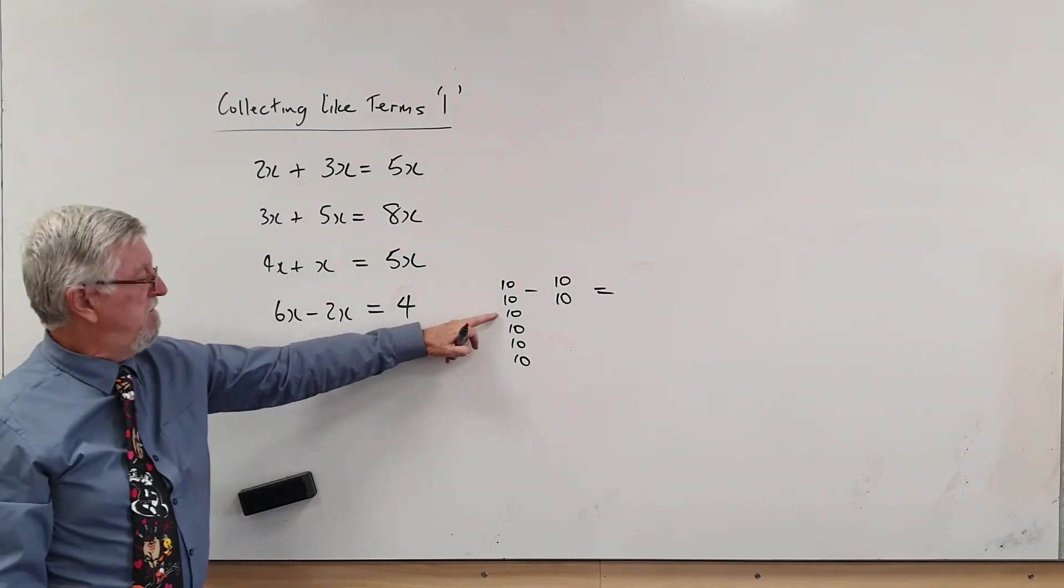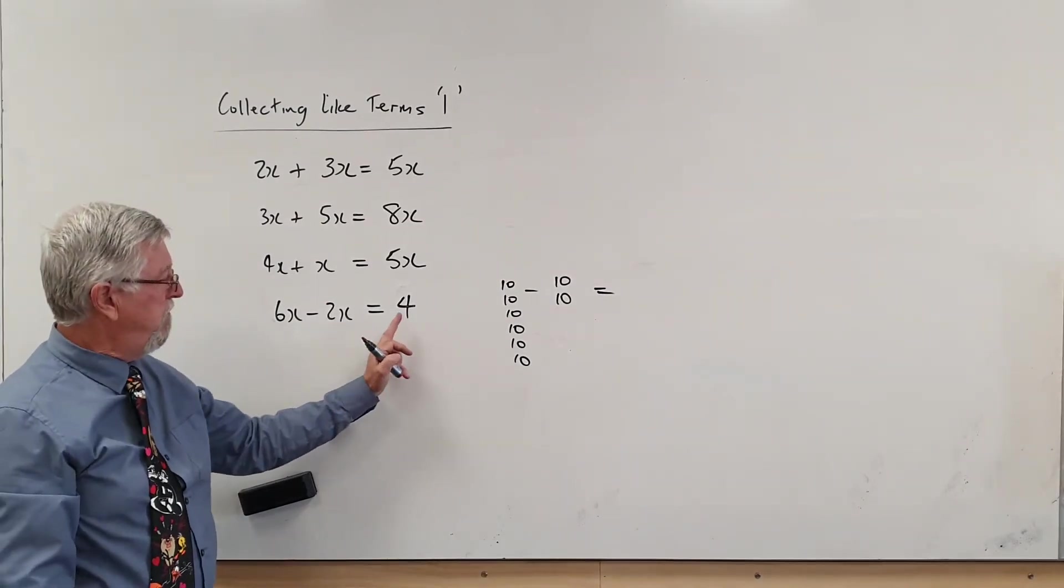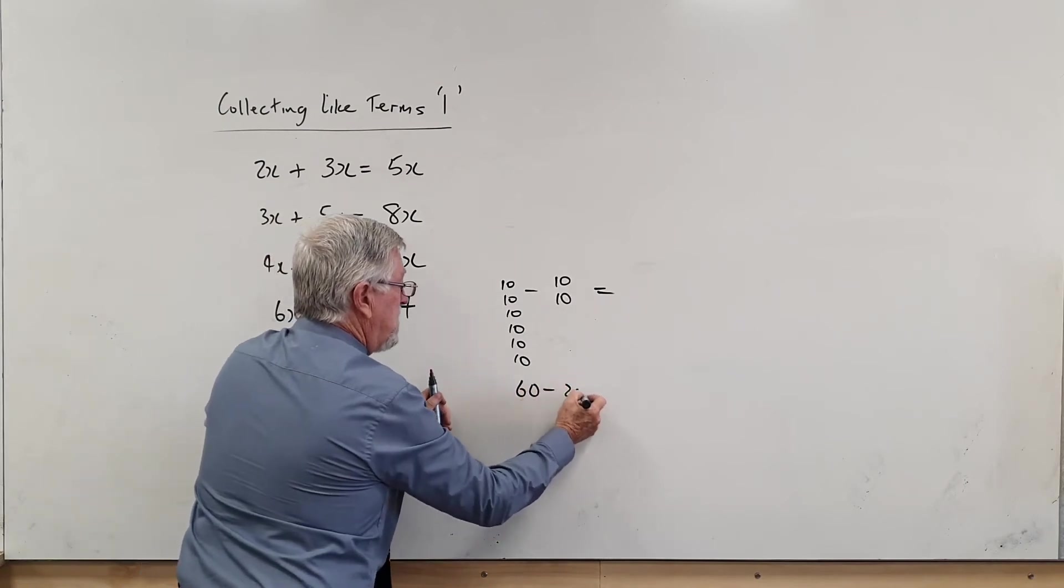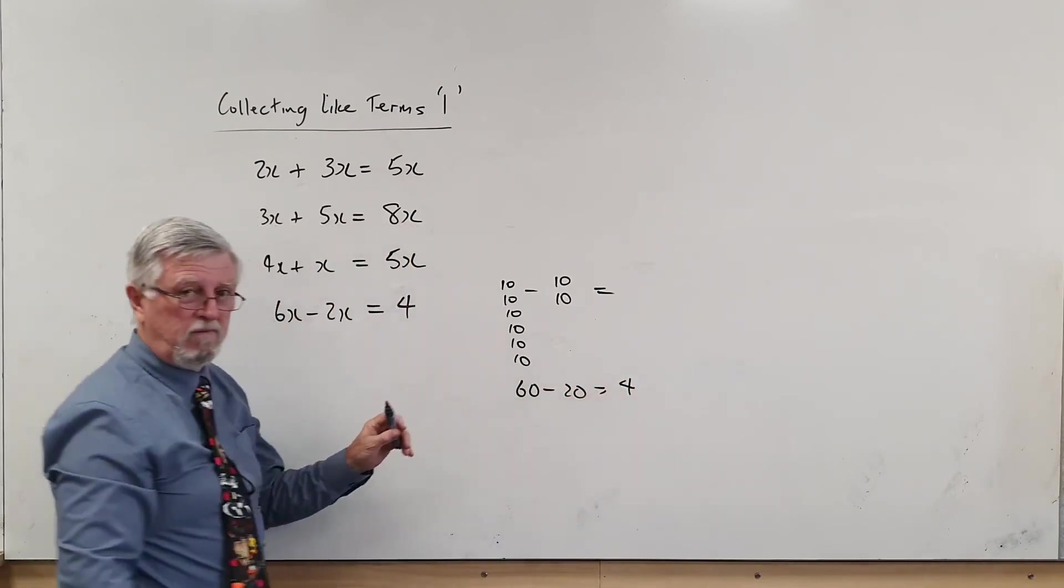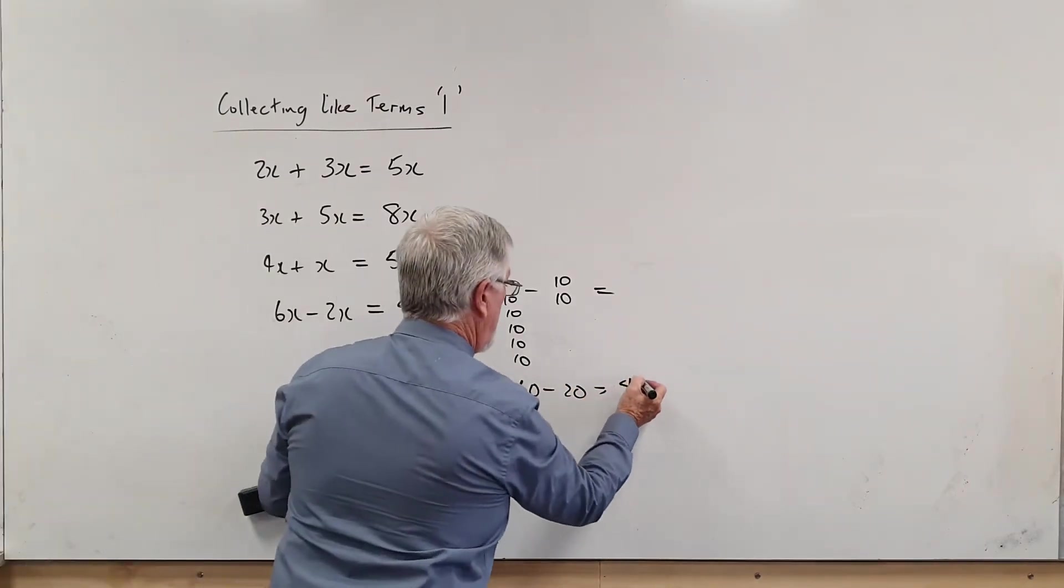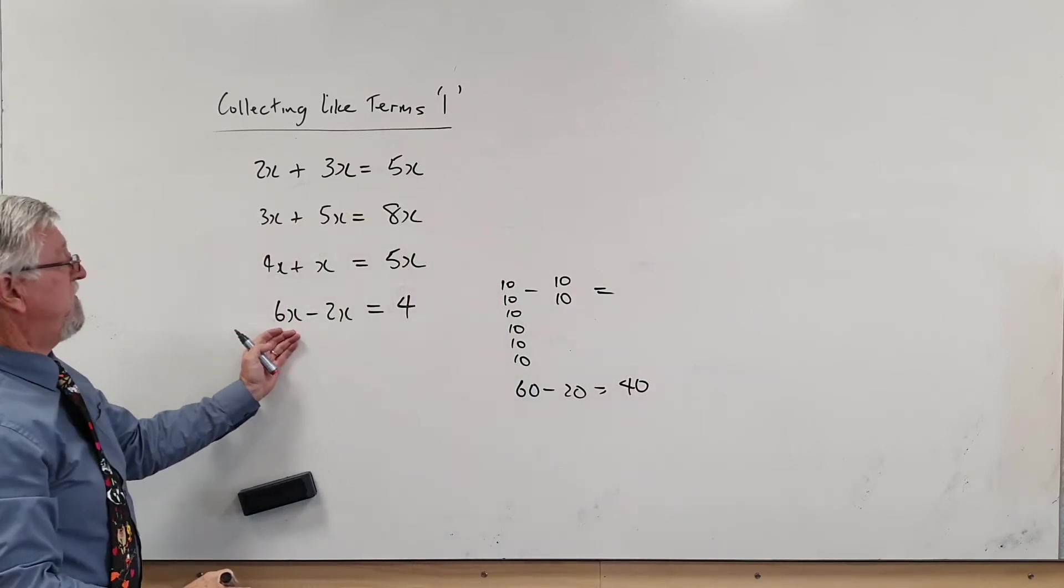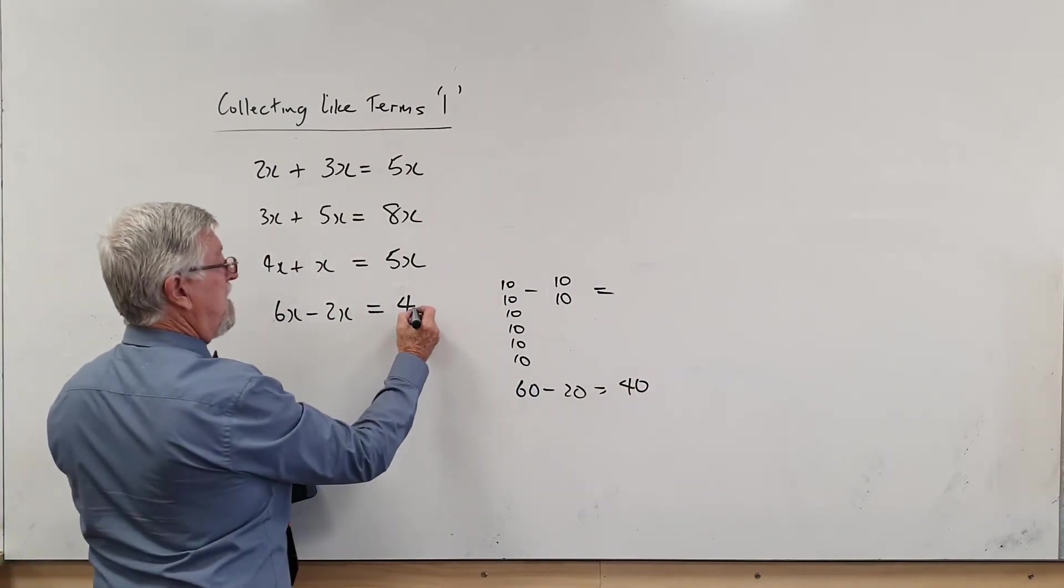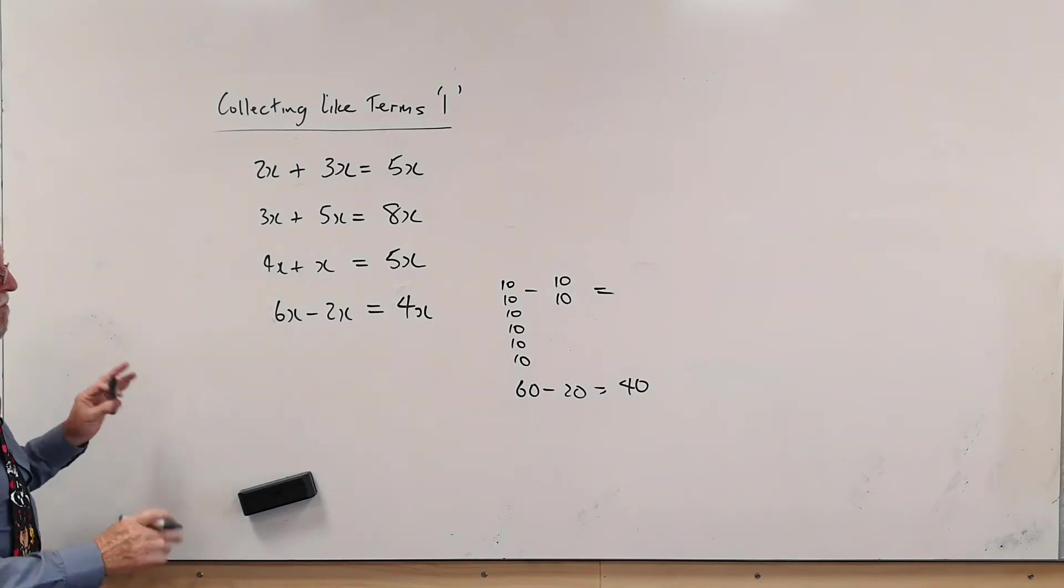What's left over? Four lots of ten. So it's not four, because 60 minus 20 is not four—it is 40. So six lots of X minus two lots of X is four lots of X.